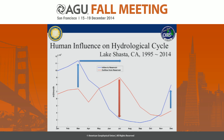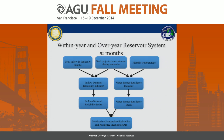About human influence on the hydrological cycle, I wanted to show what happens when we construct one dam, like in Lake Shasta, from 1995 to 2014. Inflow to the reservoir is like this blue solid line, while if we consider the reservoir, the outflow is right there. So we can see the shift of peaks and also a shift of about three months. This way, humans are influencing the hydrological cycle in all reservoir areas.